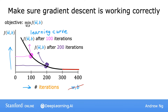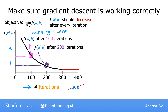Looking at this graph helps you to see how your cost J changes after each iteration of gradient descent. If gradient descent is working properly, then the cost J should decrease after every single iteration. If J ever increases after one iteration, that means either alpha is chosen poorly — and it usually means alpha is too large — or there could be a bug in the code.